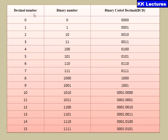Looking at decimal numbers, binary numbers, and binary coded decimals from 0 to 9: a 0 can be expressed as a single bit in binary, but in BCD you must always use the 4-bit format. Likewise, 1, 2, 3 up to 9 — every BCD code is in 4-bit format only.